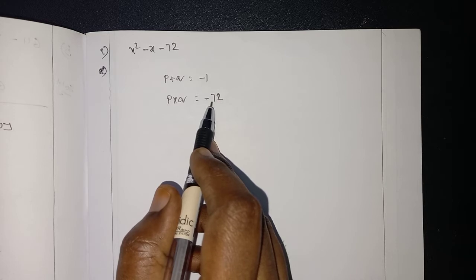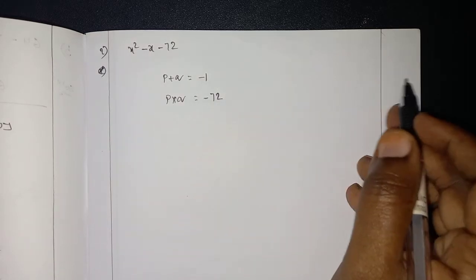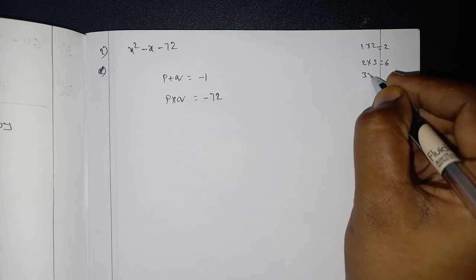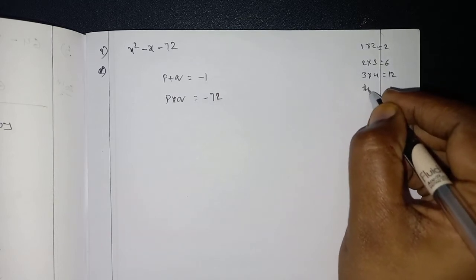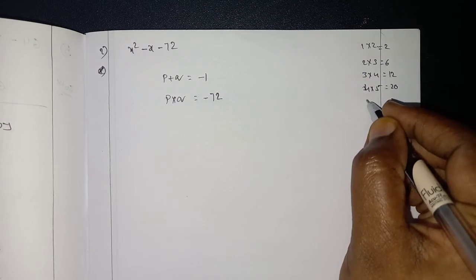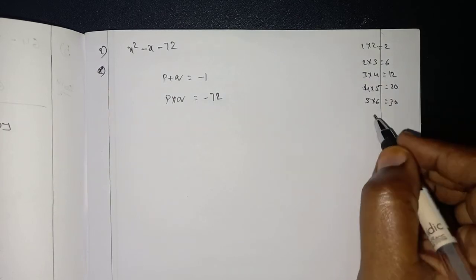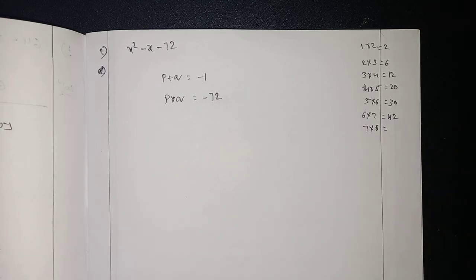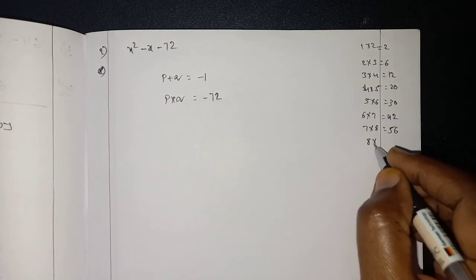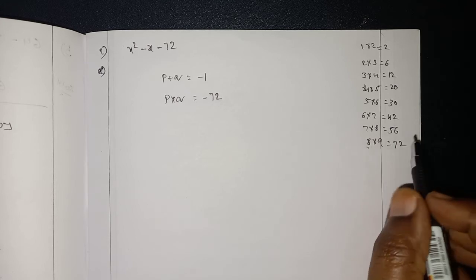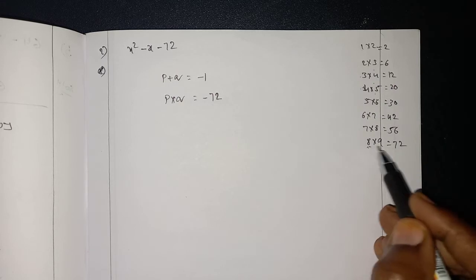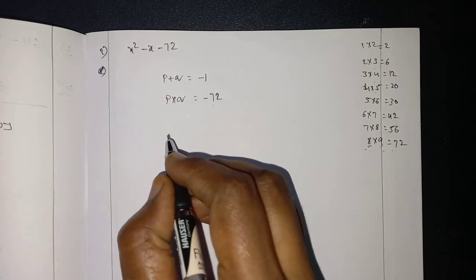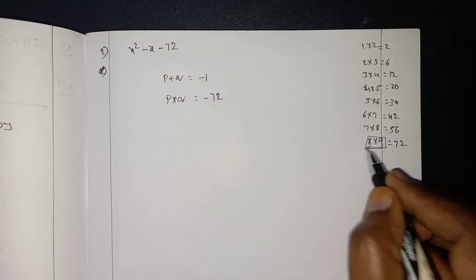By multiplying those two numbers, we should get the product 72. These are any numbers. Do you have any idea? Just count: 1 into 2 is 2, 2 into 3 is 6, 3 into 4 is 12, 4 into 5 is 20, 5 into 6 is 30, 6 into 7 is 42, 7 into 8 is 56, 8 into 9 is 72. These are all consecutive numbers. 8 into 9 is 72. So this will satisfy our condition. We have to split by using 8 and 9.